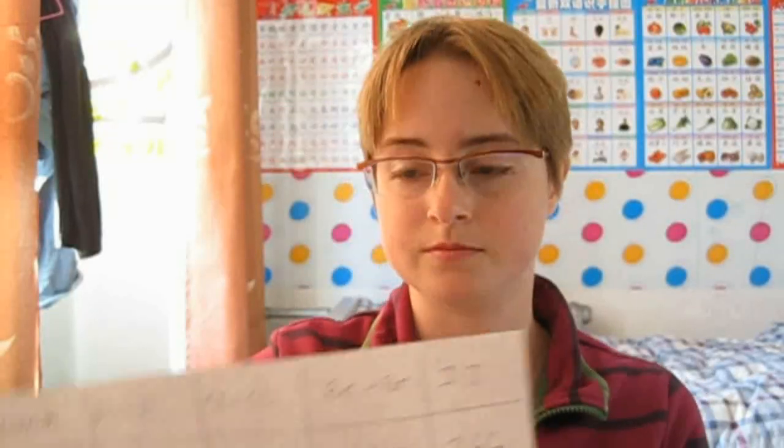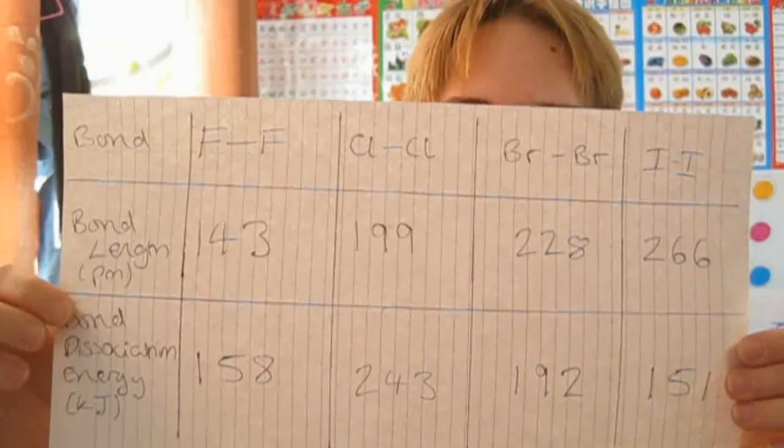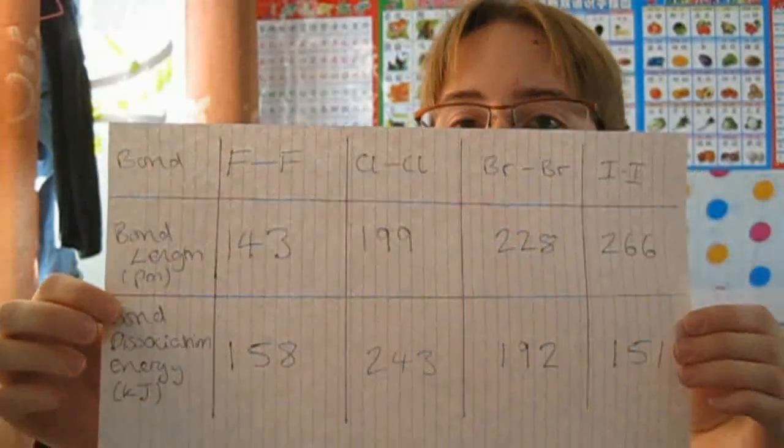They don't expect you to remember exactly what the trend is — they gave me a table of data stating the bond energies and bond lengths of each molecule of interest. I've drawn out this table again for you. You don't need to look into too much detail into the numbers; all they want to see is that you can understand the trend and explain the chemistry behind it.